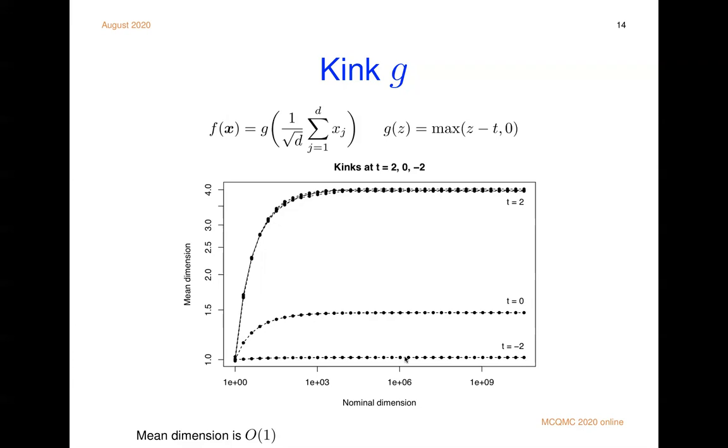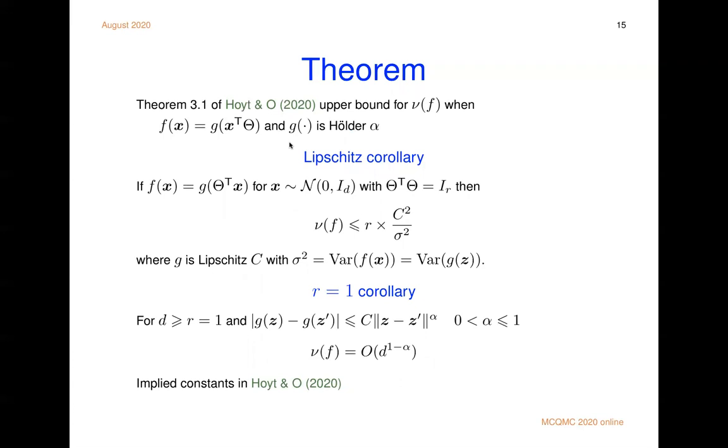So those are some examples and we have a theorem. And the theorem allows for the function g to be Holder continuous. And the theorems, you can see it in the paper, what I'll show you now are two special case corollaries. So if g would be Lipschitz, so the Holder constant alpha equals 1. In that case, the mean dimension is below r, that's how many projections we're using, times the square of the Lipschitz constant over the variance. So d goes to infinity, mean dimension remains bounded.